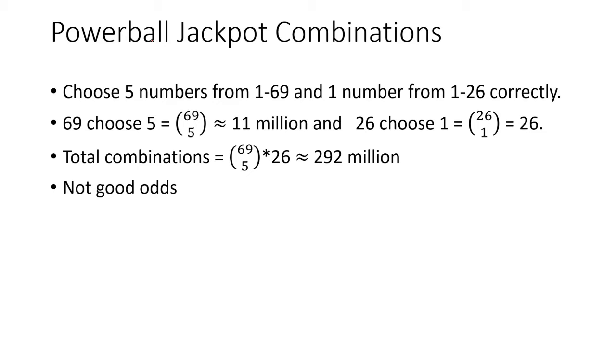So the first one we're going to do is computing the number of ways, the number of possible Powerball tickets. So the way the Powerball works is you choose five numbers from 1 through 69. Then we choose one number from 1 to 26. And if we get all those correct, we win big jackpot.